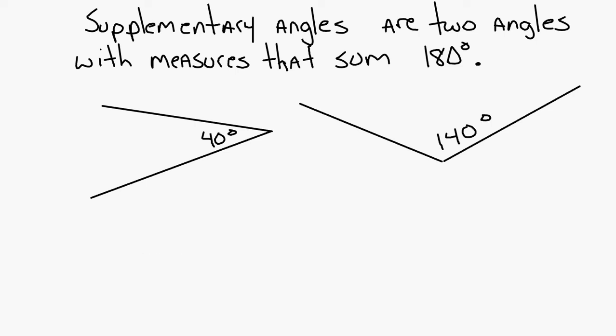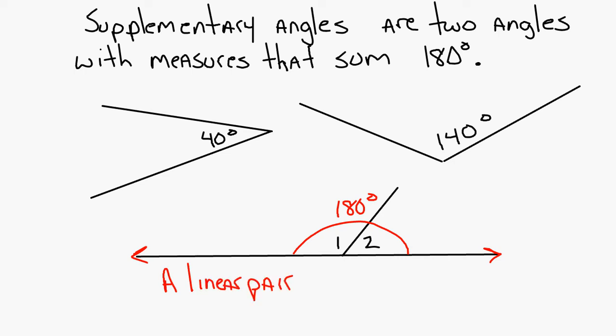We talked about a linear pair on Friday. A linear pair, angle one plus angle two in this picture. What's the sum of these two angles? 180. 180, right? Because they form a line. A linear pair is supplementary.